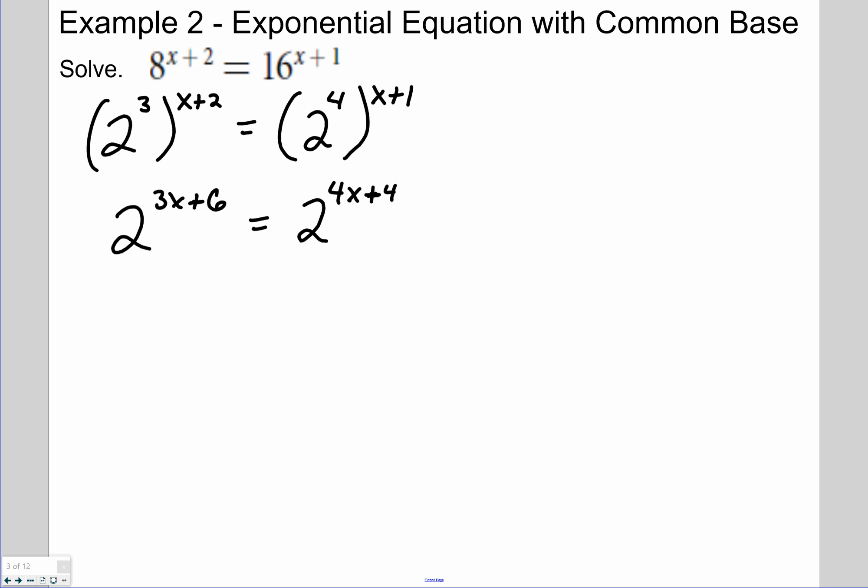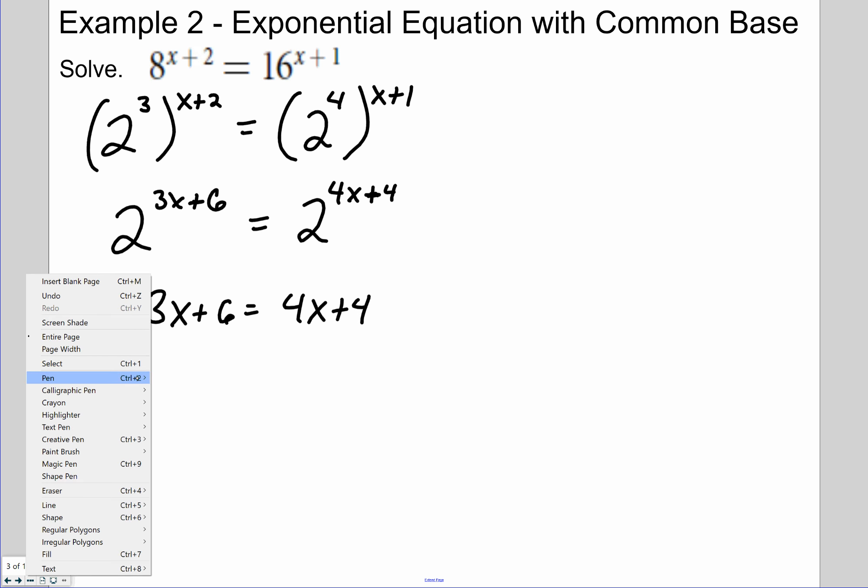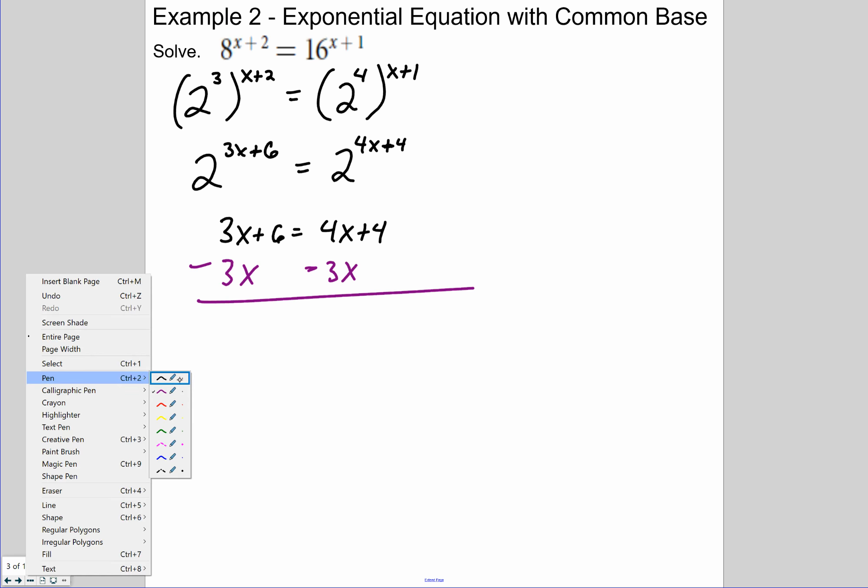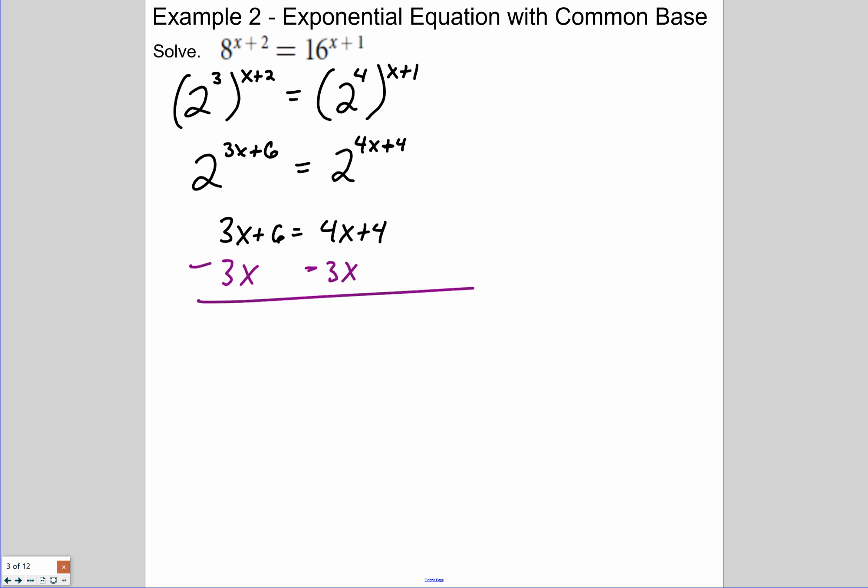And now look where we are. We are exactly where we were to start example one. So everything from here is stuff that you've already done. So let's bring down just the exponents and solve these. Juliana, what do you want to do first when you look at this? 3x plus 6 equals 4x plus 4. So you want to move the 3x over? So that leaves us with 6 equals x plus 4. Then subtract 4 from both sides, so x equals 2. Excellent. Do I know if that's right? No.